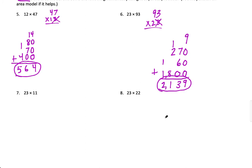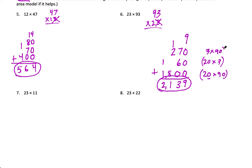If you're unsure about zeros, write the multiplication on the side — for example, write 20 times 90 separately so you can clearly see there are two zeros in the product. You can always do that on the side. I definitely recommend getting in the habit if you tend to leave off zeros. Write things like 3 times 90 on the side so you can see exactly how you got those products.